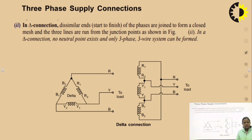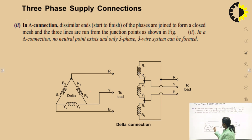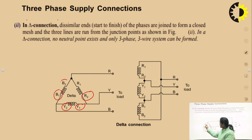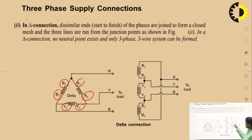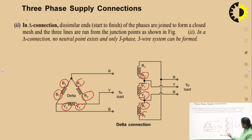In delta connection, the dissimilar ends of the phases are joined to form a closed mesh and three lines are run from the junction points. In a delta connection, no neutral point exists and only a three-phase three-wire system can be formed. The finishing end of one coil is connected to the starting end of the next — for example, R2 to Y1, Y2 to B1, and B2 to R1, forming the closed mesh.